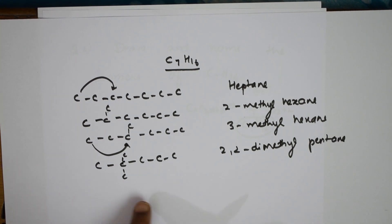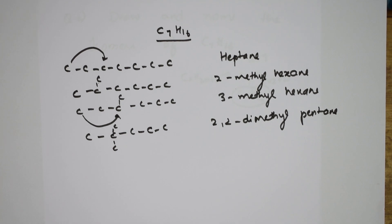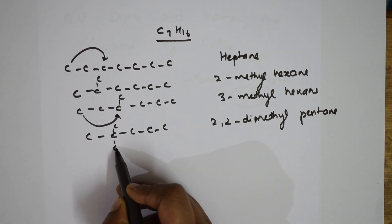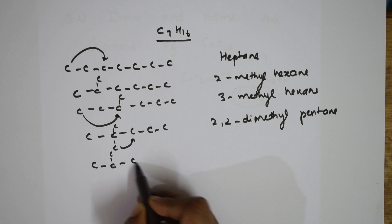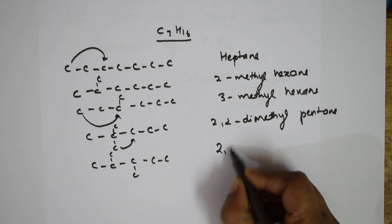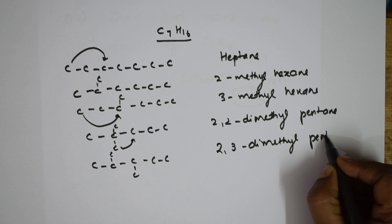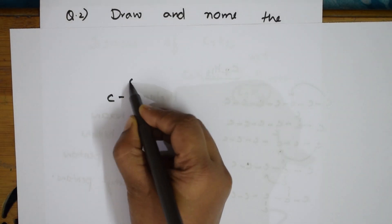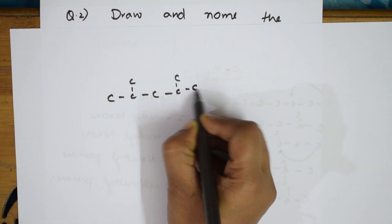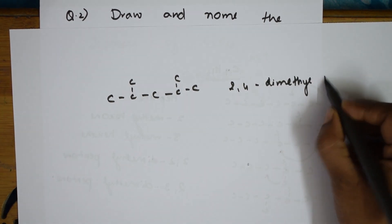I need to write all possible isomers. Next, from here I'll shift this carbon: 1, 2 — this becomes 2,3-dimethylpentane. Then turn the page for the next combination: 1, 2 — placing the carbons at positions 2 and 4 — this is 2,4-dimethylpentane.